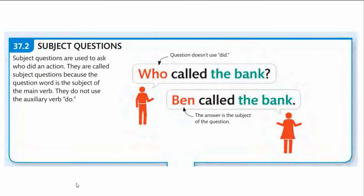The next pointer is subject questions. We have already seen object questions, where 'did' was an essential part. Subject questions are used to ask who did the action. They are called subject questions because the question word is the subject of the main verb. They do not use an auxiliary. For example, 'who called the bank?' — here 'who' does not use the word 'do' or 'did.' The answer is 'Ben called the bank,' meaning Ben did the action.